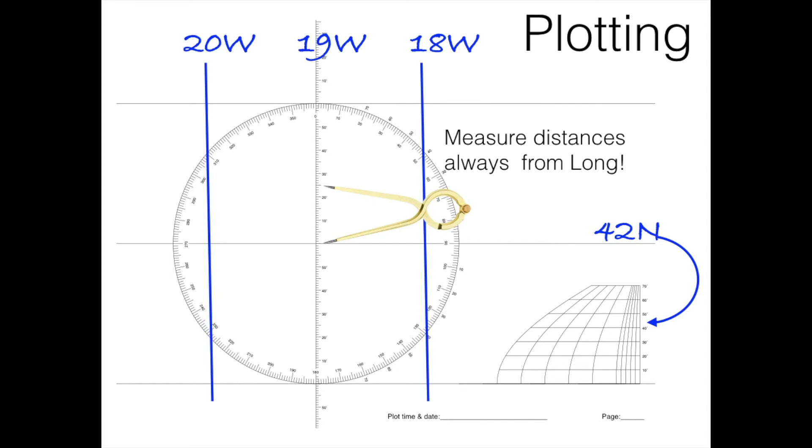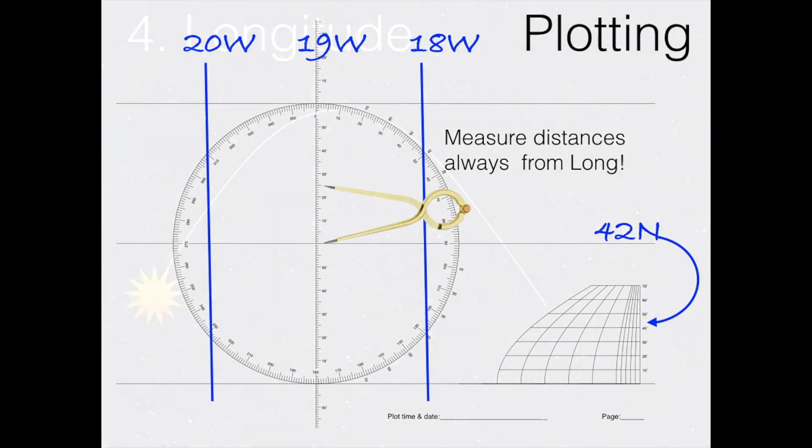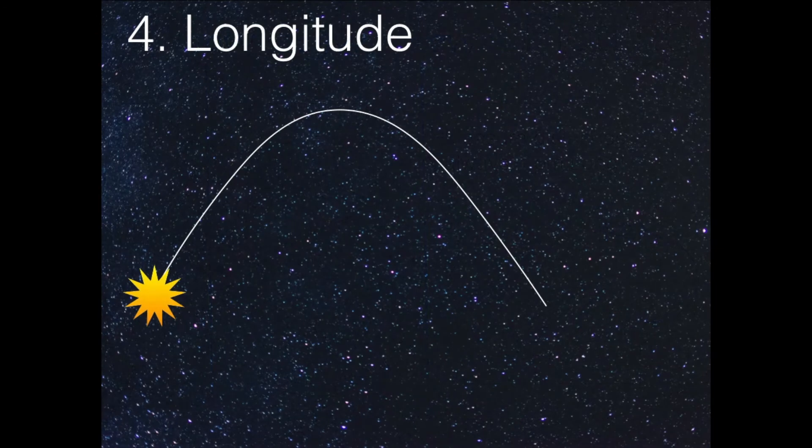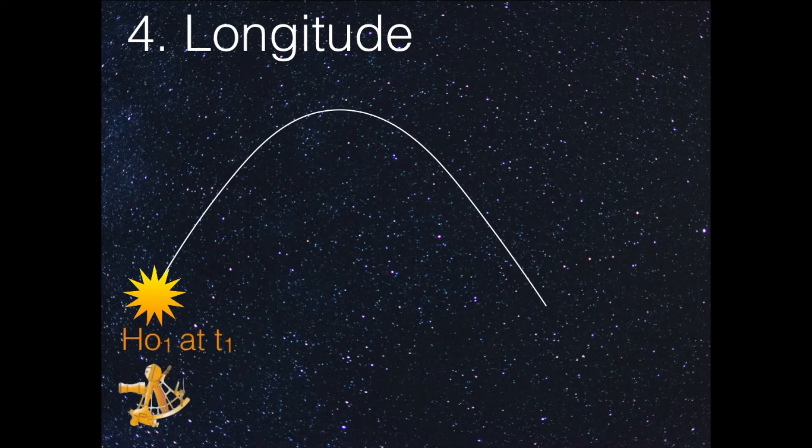Some of you might now think of how about, why can't we use the longitude problem by just taking two heights of the sun on either side of noon? And that is a way that is described and used, and I know Bobby Schenk was using it a lot in Germany. And I think the idea is really good in theory. So I'll just explain what the idea is. In the morning, you measure an angle. You observe the height of the sun, HO1, in the morning, at a time slot, at a point in time, time 1, T1.